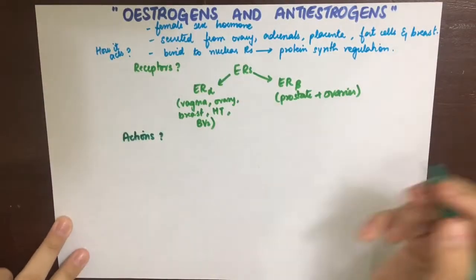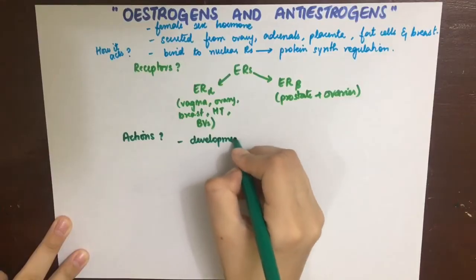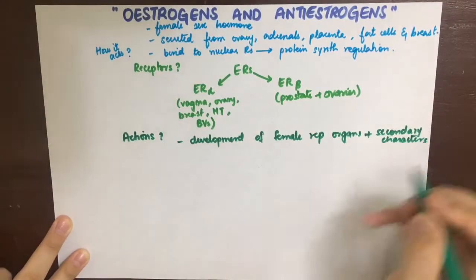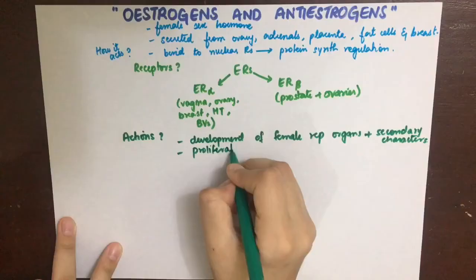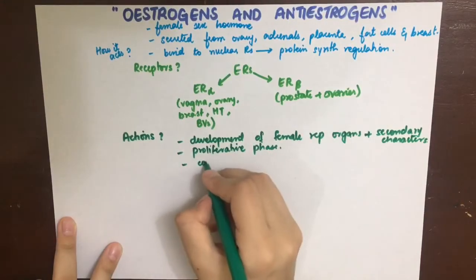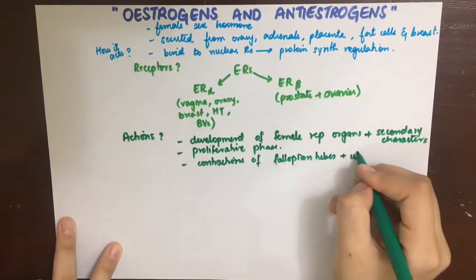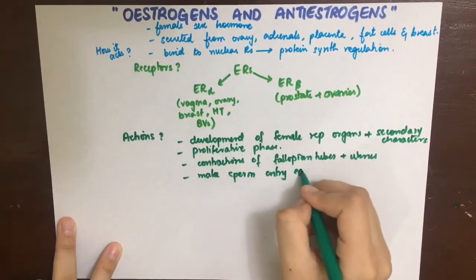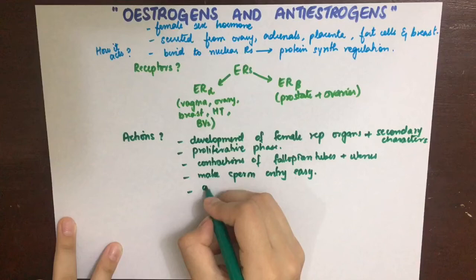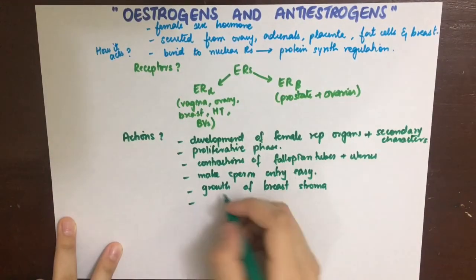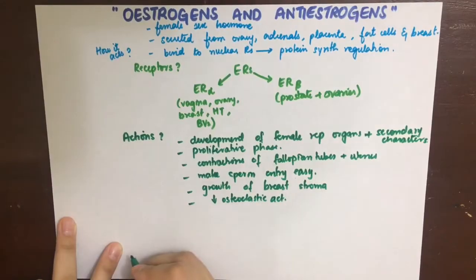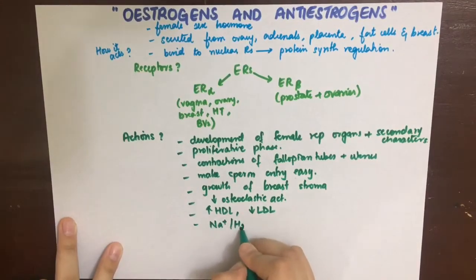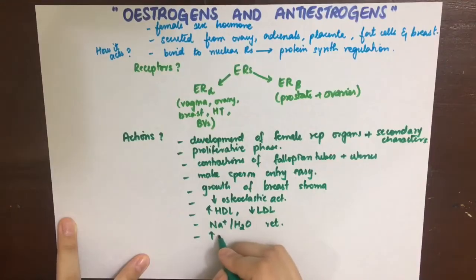To understand the action of estrogen analogs and antagonists, we need to understand the functions of estrogen first. It is responsible for growth and development of female sexual organs and secondary sexual characters. It is also responsible for the proliferative phase of the menstrual cycle. It contracts fallopian tubes and myometrium rhythmically, makes sperm entry easy by making cervical secretion thin, watery, and alkaline, and promotes growth of breast tissue specifically the ducts.